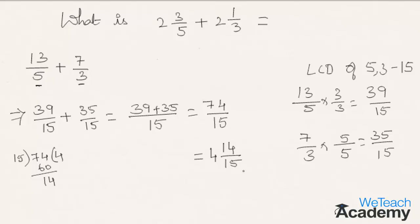Hence the result for 2 3/5 plus 2 1/3 is 4 14/15. So hope you understood the concept. Do like and subscribe to WeTeachAcademy.com. Thanks for watching, have a nice day.